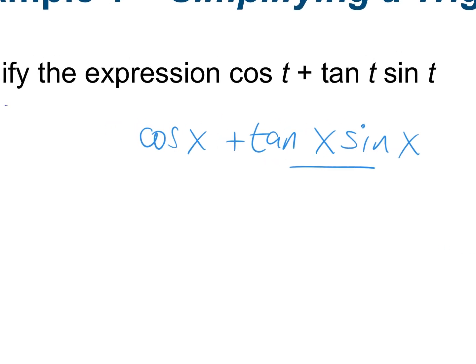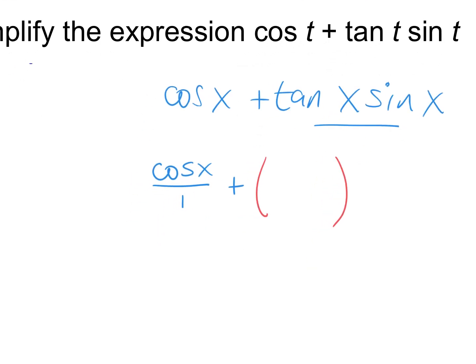I'm going to leave cosine just like it is — that's our most basic trig function — I'll put it over 1. Plus, what can I change tangent to? Look at your identity cheat sheet — sine over cosine. So sine over cosine, times sine over 1.